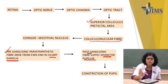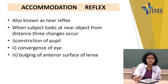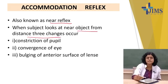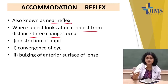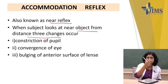Next is the accommodation reflex, also known as the near reflex. When the subject looks at a near object from a distance — you ask the subject to look at a distance, then suddenly focus their gaze on a near object — this is accommodation.